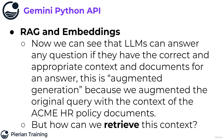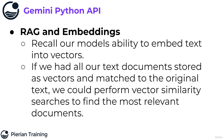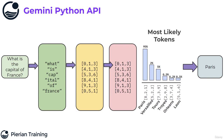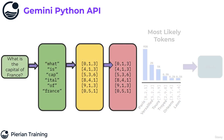But remember, it's RAG not just AG. So how do we retrieve this context to perform full Retrieval Augmented Generation? Recall our model's ability to embed text into vectors. If we had all our text documents stored as vectors and matched to the original text, we could perform a vector similarity search to find the most relevant documents. Remember back to our very first discussion of how large language models work — part of the process is to actually create these vector embeddings from text. So we're going to focus on this to understand the full RAG process.